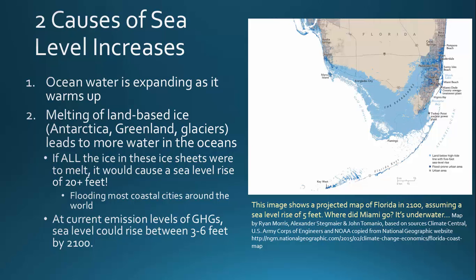The main cause that you probably hear about is the melting of land-based ice, which includes the ice sheets in Antarctica and the southern hemisphere, but also Greenland and other glaciers in the northern hemisphere. As these land-based ice sheets melt, it leads to more water going into the oceans and causes the sea level to rise.